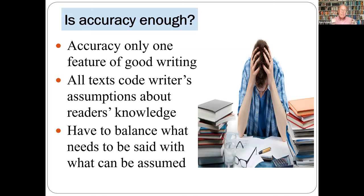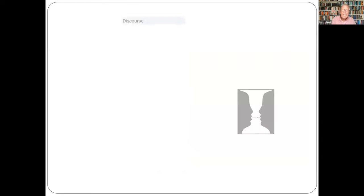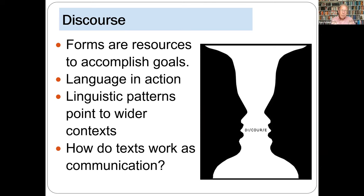This model views text as forms which can be understood independently of users, and if we adopt it as a teaching approach we run the risk of misleading students into thinking they just have to put the words in the right order. The second way of looking at text sees them as discourse — the way we use language to communicate, to achieve purposes in specific situations. Here, the writer is seen as having certain goals, and the ways we write are resources to accomplish those goals.